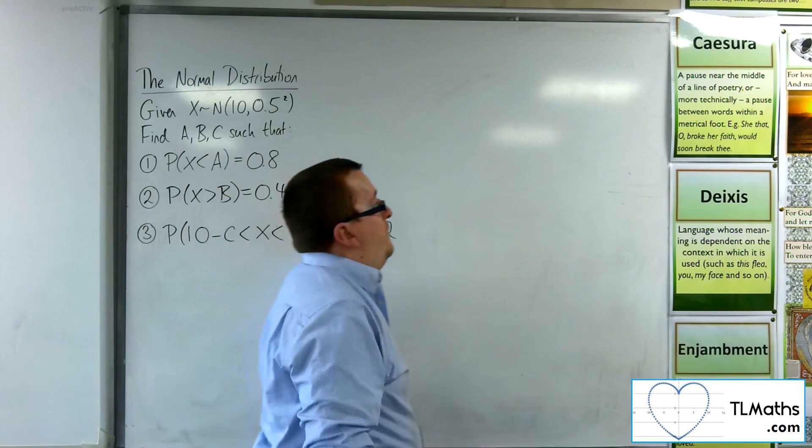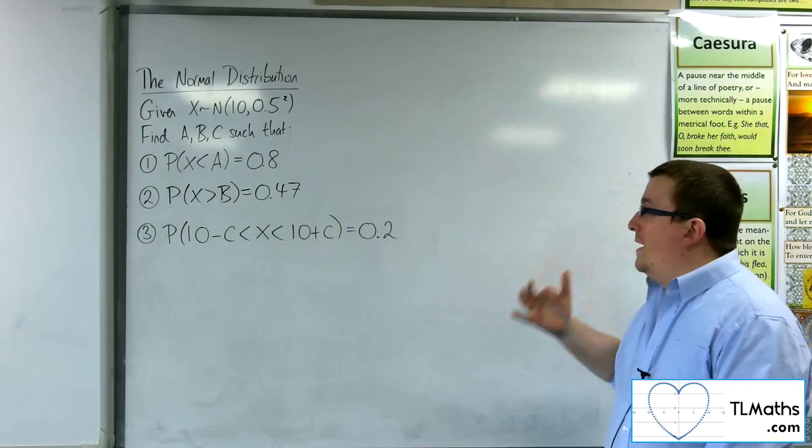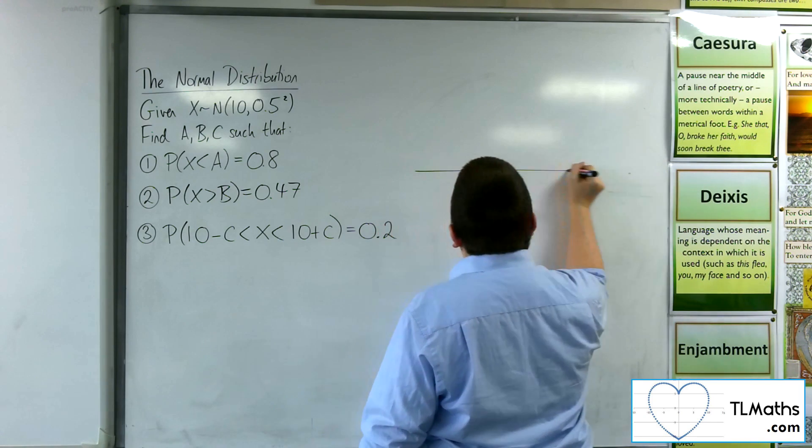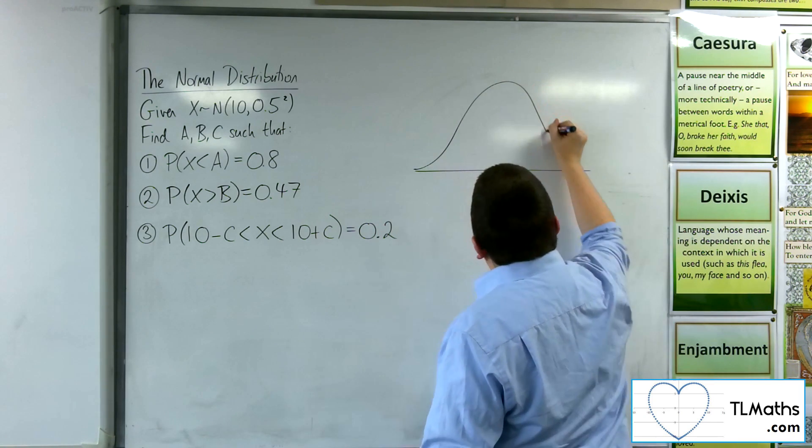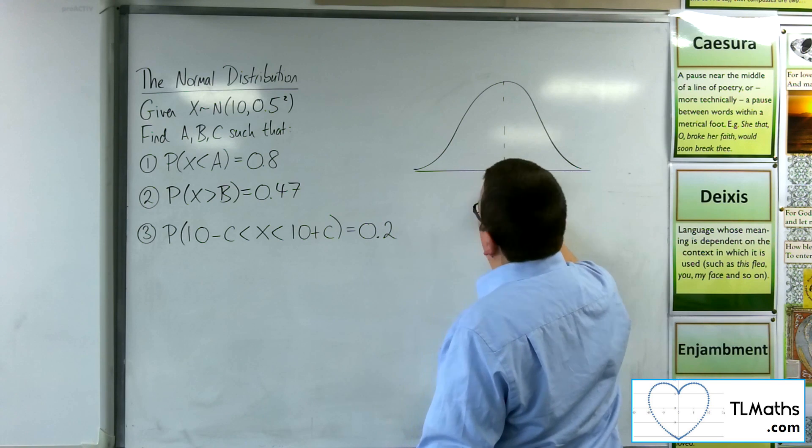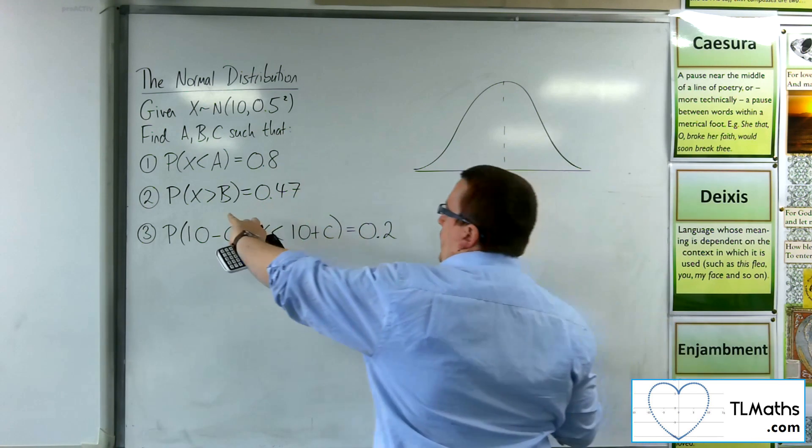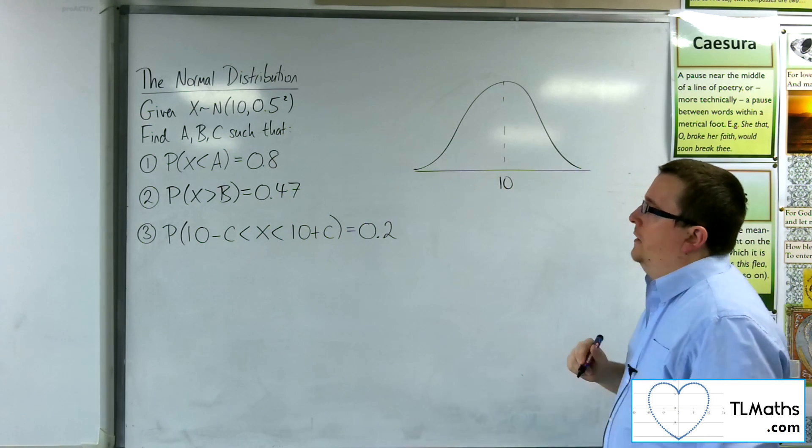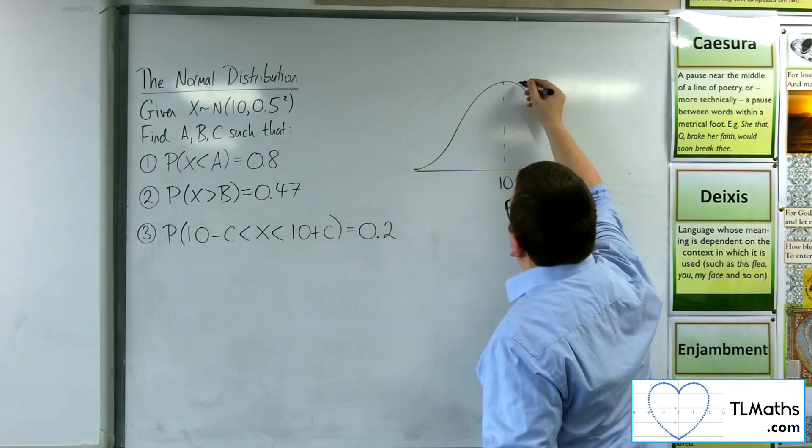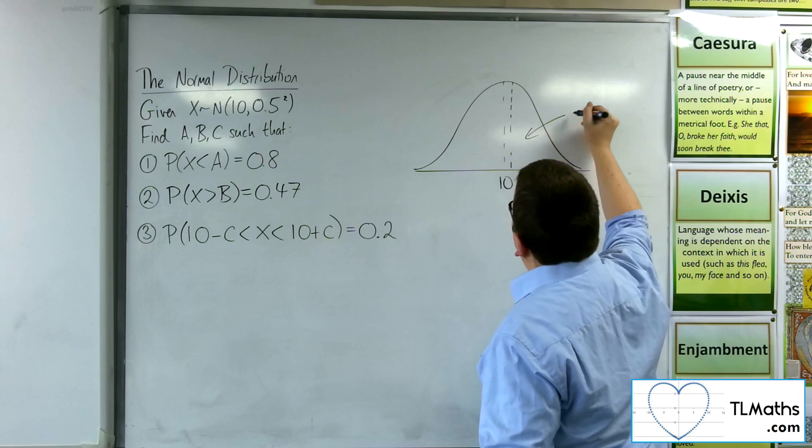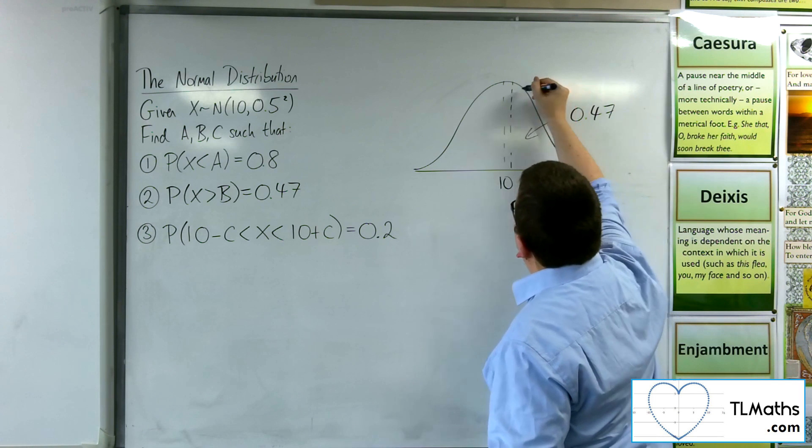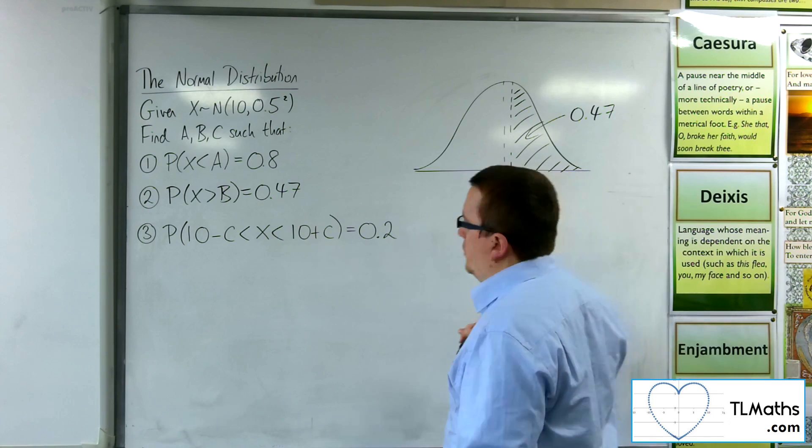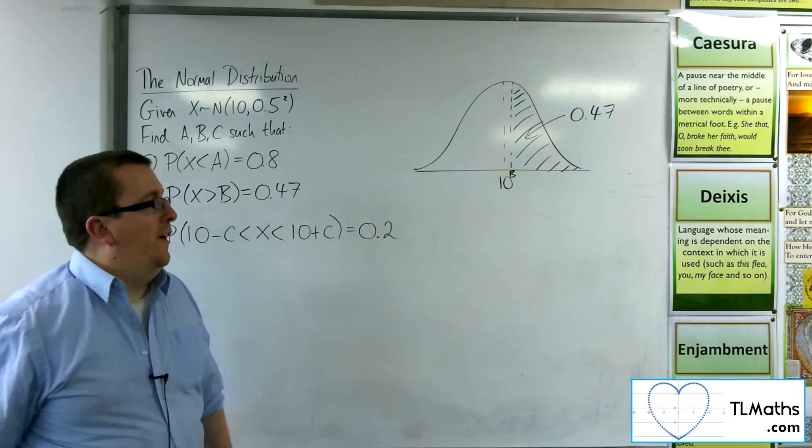So for number two, we've got that the probability of x being greater than b is 0.47. So let's see what that looks like. So on my normal distribution curve, there's 10. And we're saying the probability of being greater than b is 0.47, or 47%. So if that's 50%, then there, that could be the 47%. We know 47% is greater than that value b.